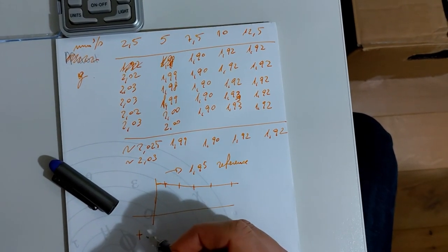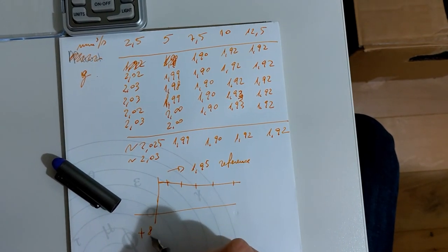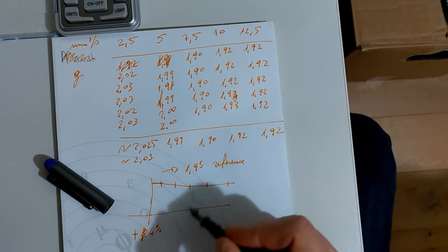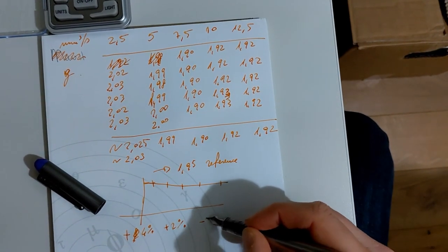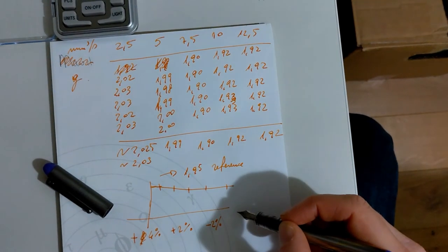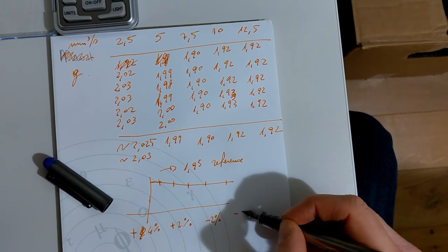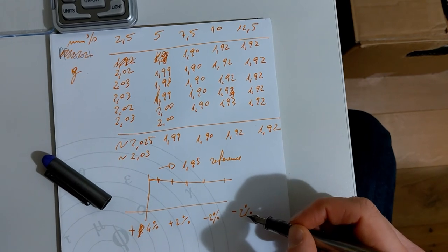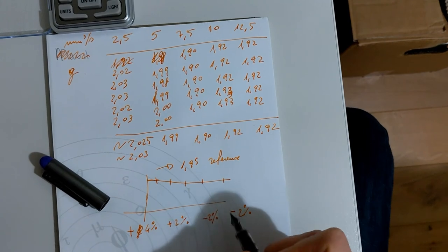We will have plus 8%, plus 4%, plus 2%, minus 2%, or about minus 1-2%, then 3%, 1.5% here, the other 3%.